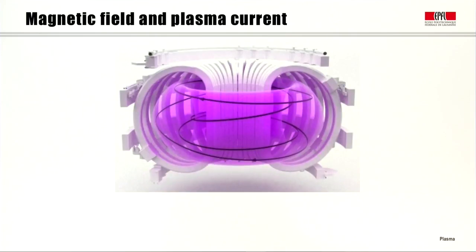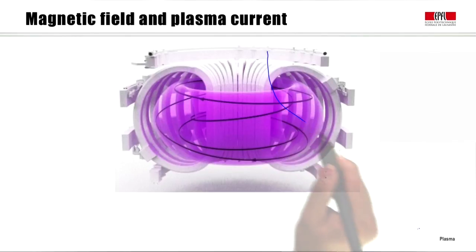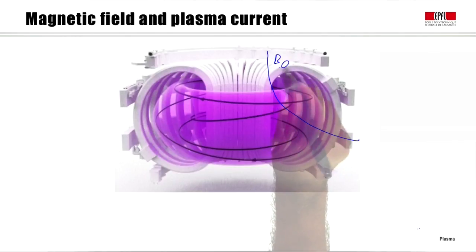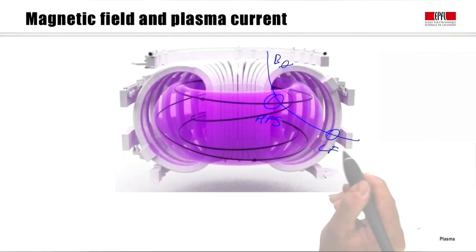Let's look at the radial dependence of the toroidal field and plasma current. The toroidal field is produced by the toroidal field coils wound around the poloidal cross-section. Current flows in this structure and therefore the toroidal field has a 1 over R dependence. The toroidal field is higher at the center of the tokamak and lower towards the outer boundary. This allows us to define the high field side and the low field side of the plasma cross-section.